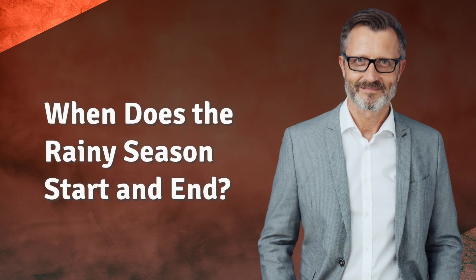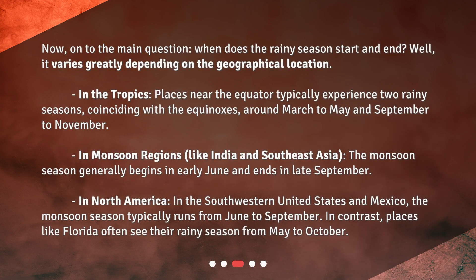When does the rainy season start and end? Well, it varies greatly depending on the geographical location. In the tropics, places near the equator typically experience two rainy seasons, coinciding with the equinoxes, around March to May and September to November.